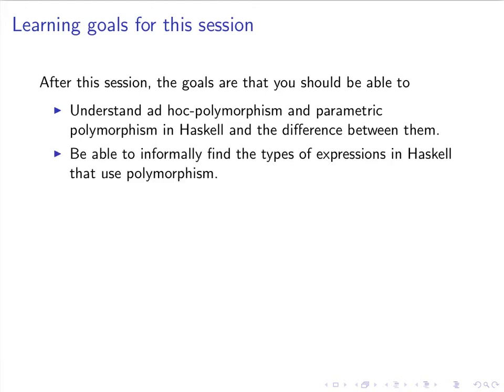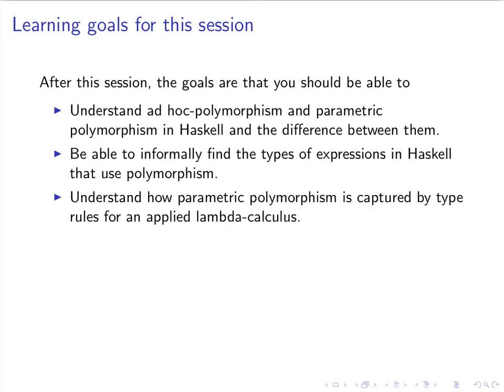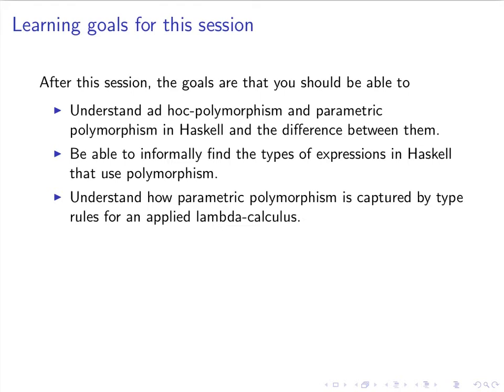You should be able to informally find the types of expressions in Haskell that use polymorphism. You should understand how parametric polymorphism is captured by type rules for an applied lambda calculus, because what's underneath all of this is a version of the lambda calculus. You should also be able to understand how ad hoc polymorphism, and in particular type classes, can be captured by the type rules for an applied lambda calculus.